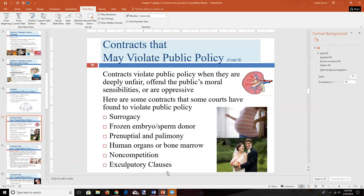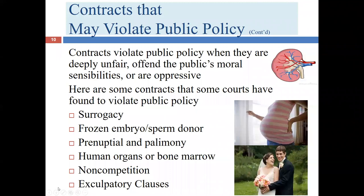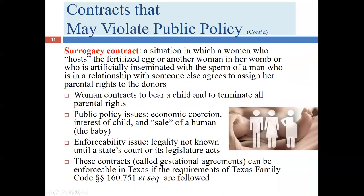The examples the textbook goes through are: surrogacy, frozen embryo or sperm donor agreements, premarital or prenuptial agreements, palimony agreements, the sale of human organs or bone marrow, non-competition agreements, and exculpatory clauses. In Texas we've got statutes for most of these, so we don't really operate in the pure public policy space for most of them. If this textbook were written strictly for a Texas audience, most of these would be under the statute category.